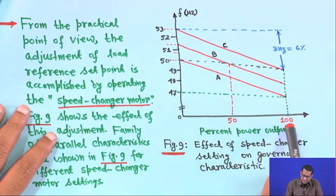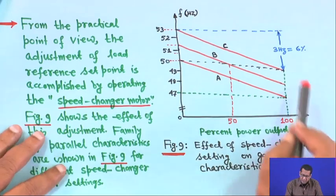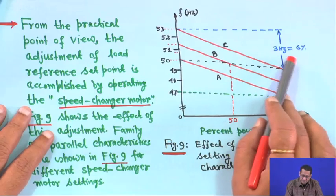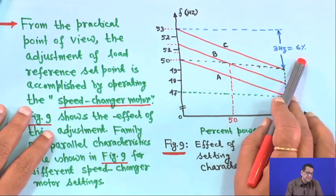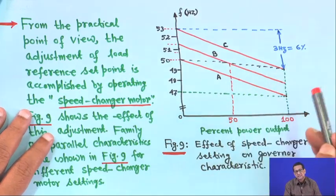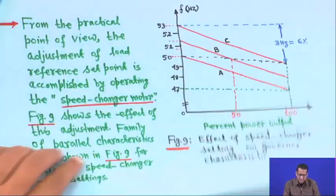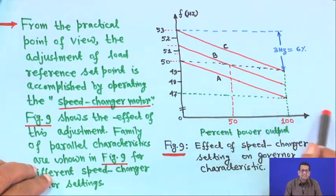With a 6 percent droop setting, a 100 percent change in power output corresponds to 3 hertz in a 50 hertz system. If it is 4 percent droop, it corresponds to 2 hertz, and so on. That is the idea of the speed droop characteristic.